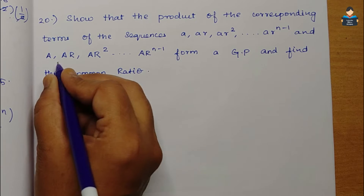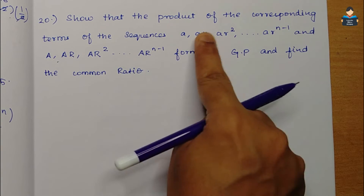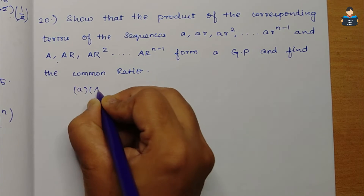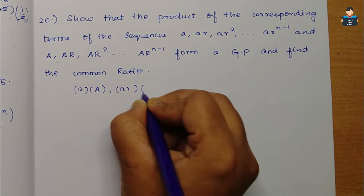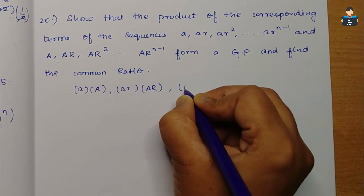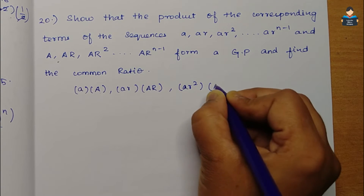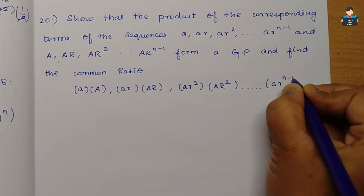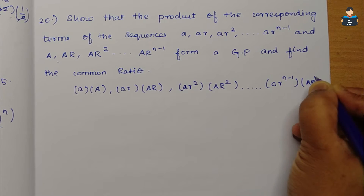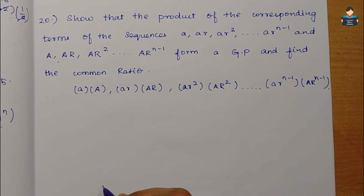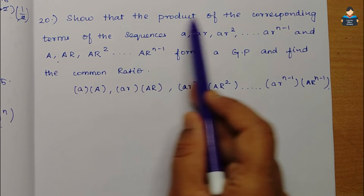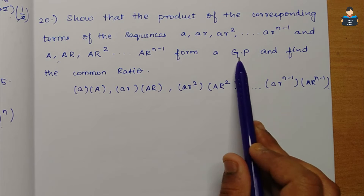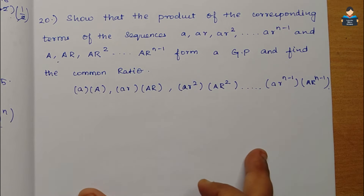The product of corresponding terms gives us: a×A, ar×AR, ar²×AR², ..., arⁿ⁻¹×ARⁿ⁻¹. We need to check whether this sequence of products forms a GP and find the common ratio.